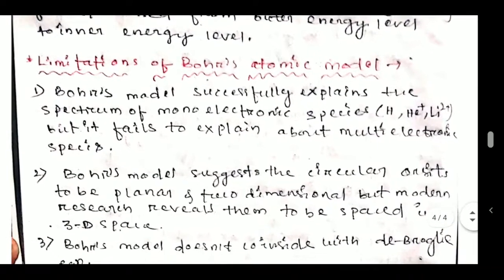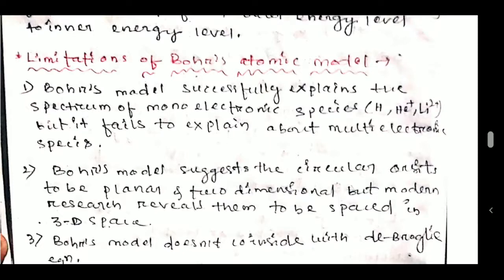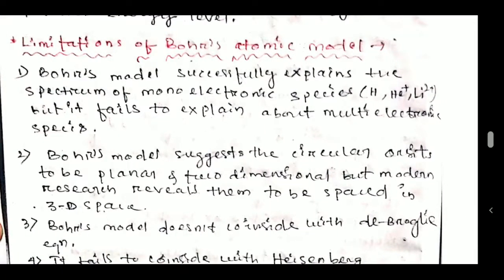Now let's study the limitations of Bohr's atomic model. First: Bohr's model successfully explains the spectrum of mono-electronic species like hydrogen, He⁺, and Li²⁺, but it fails to explain multi-electronic species. For He⁺, the atom loses one electron and has only one remaining; for Li²⁺, lithium has three electrons but with a +2 charge, leaving only one electron — these are mono-electronic species. It fails for atoms containing more than one electron.